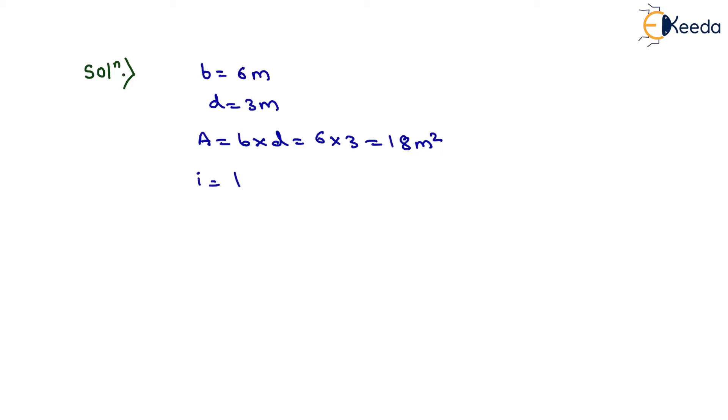Now bed slope is given as 1 in 2000, therefore we will write it as 1 by 2000. Similarly, Chezy's constant is also given, that is 55.